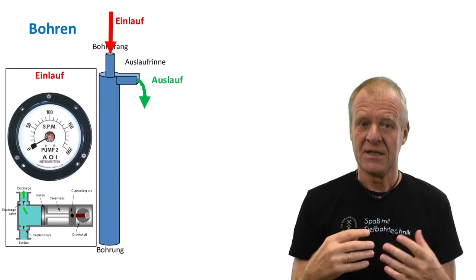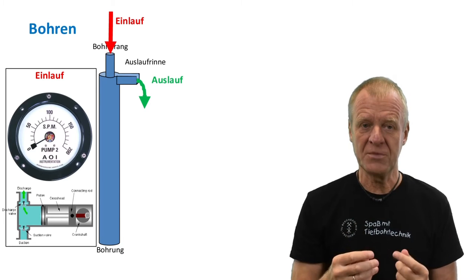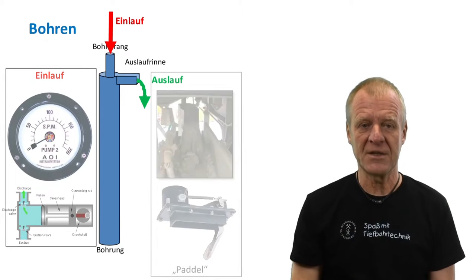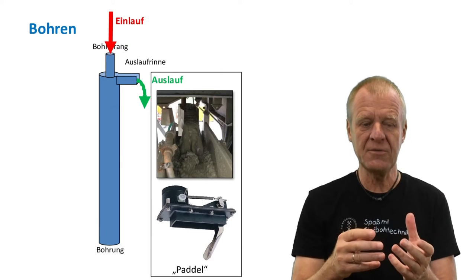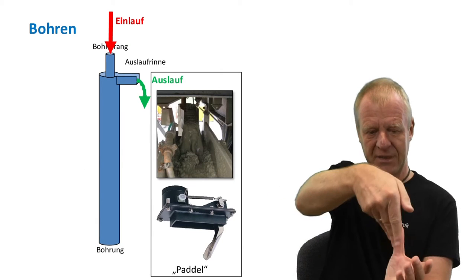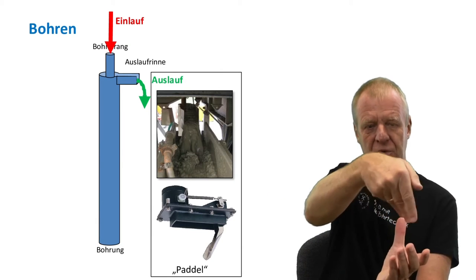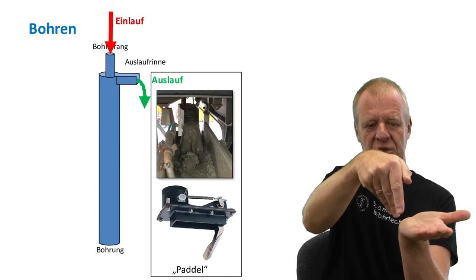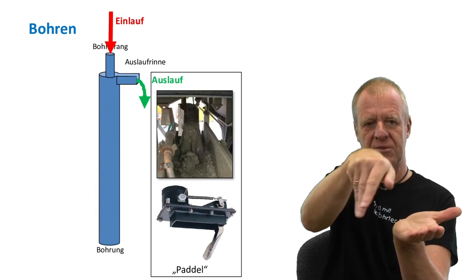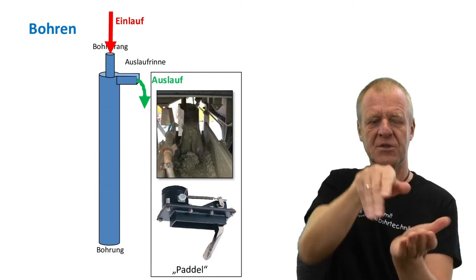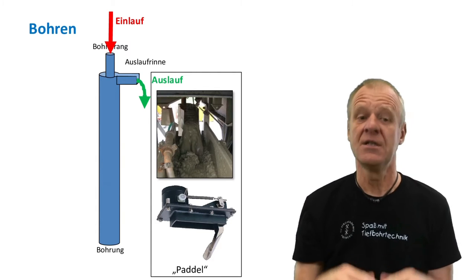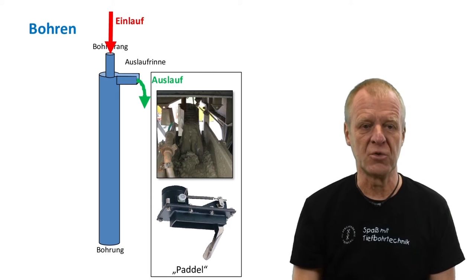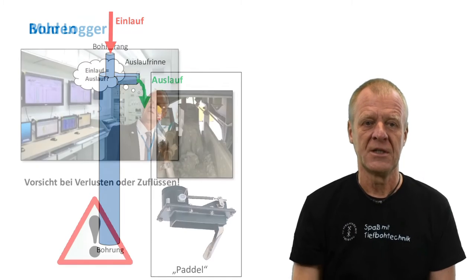We can also measure the mud flow coming out of the borehole. Here, we usually use a flow paddle. The flow paddle hangs across the outcoming flow in the mud line under the rig floor. The more mud comes out of the borehole, the further the paddle is pushed to the side, so the deflection of the paddle is a measure of the flow rate.